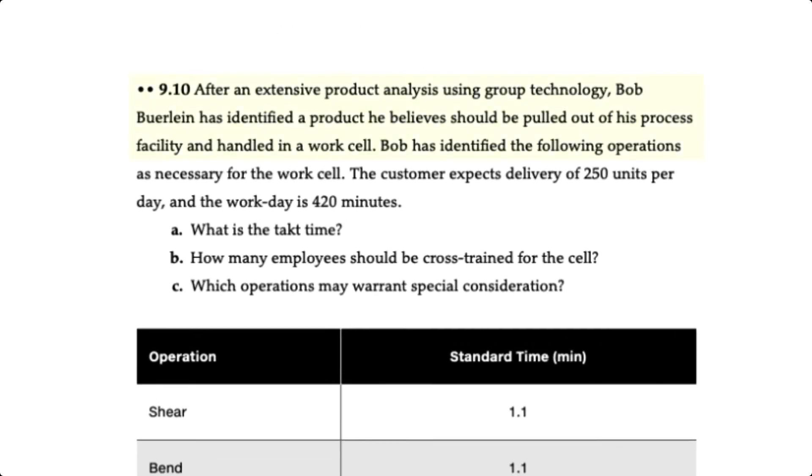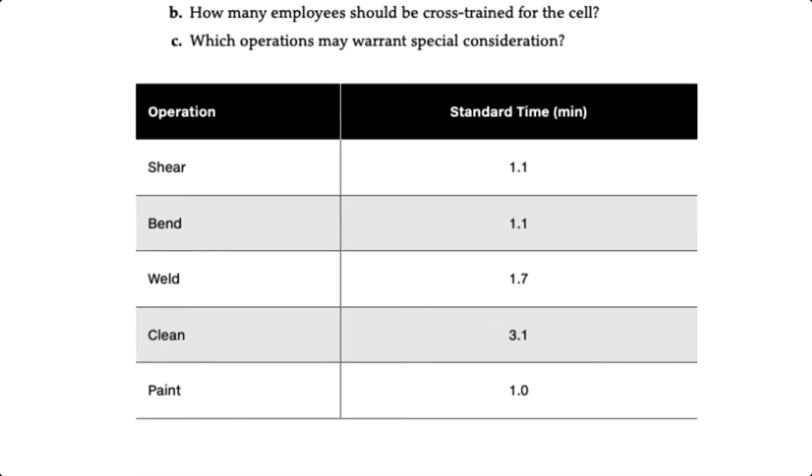After an extensive product analysis using group technology, Bob has identified a product that he believes should be pulled out of his process facility and handled in a work cell. He's identified the following operations as necessary for the work.